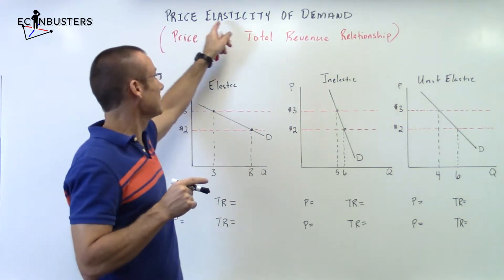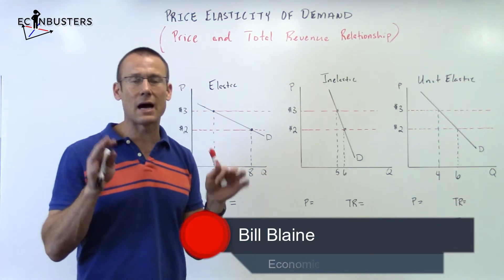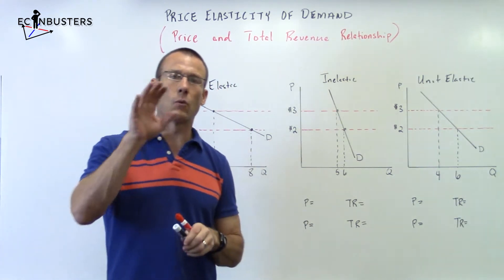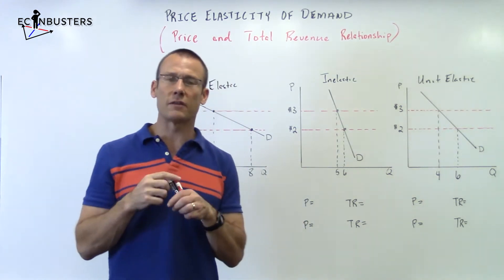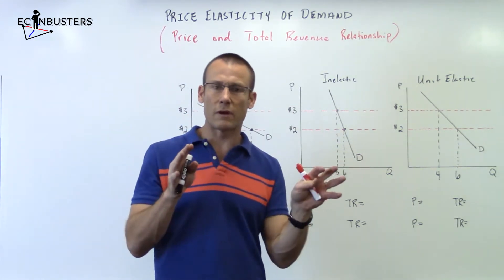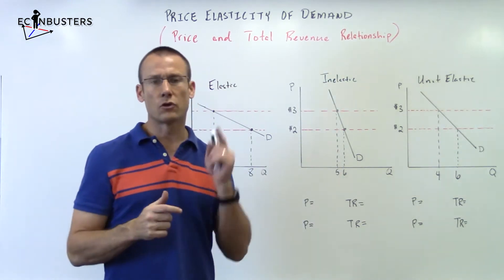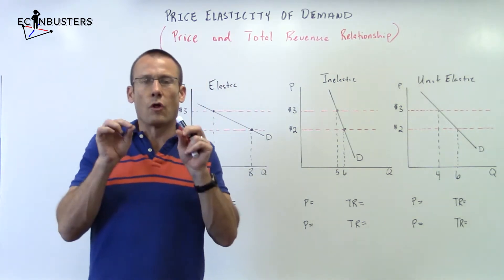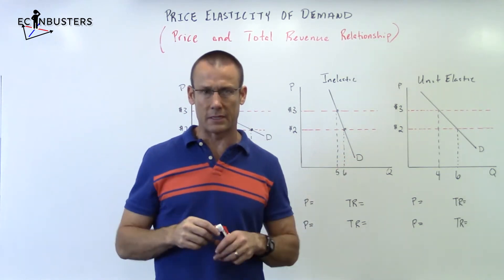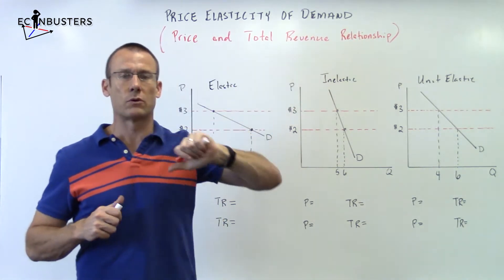Welcome back. We're still on price elasticity of demand and now we're going to look at an important relationship: the relationship between price and total revenue based on the PED value. A cautionary warning from the beginning — some professors, including me, get you thinking about price and total revenue, then throw in a quick question about QD. The law of demand states price goes up, QD goes down — that never changes. Price to QD is always inverse, no matter what PED is. However, the PED value very much determines the price-to-total revenue relationship.